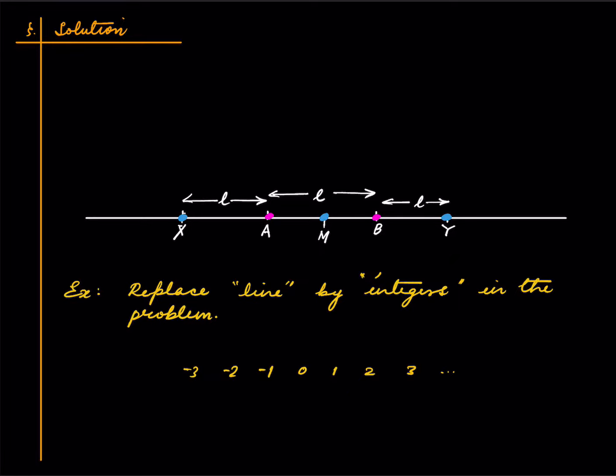So we have been given a coloring of the set of all integers with two colors, red or blue, and we want to show that you can find two integers whose midpoint is also an integer, and with the property that the endpoints, meaning the two integers, and the middle integer all have the same color.